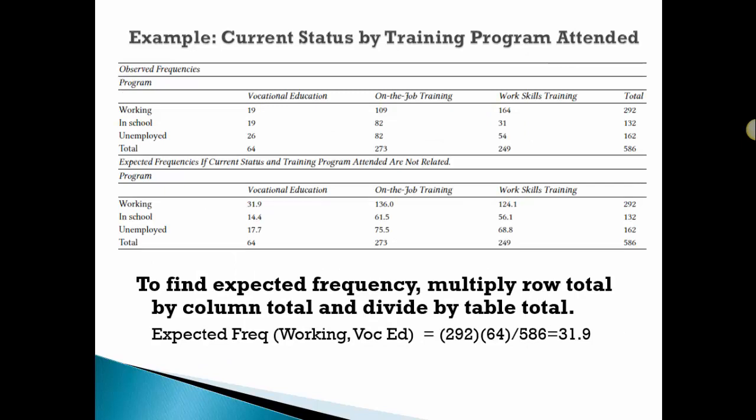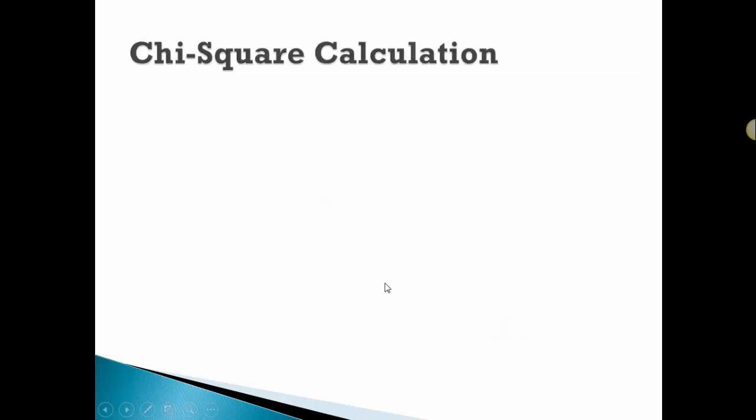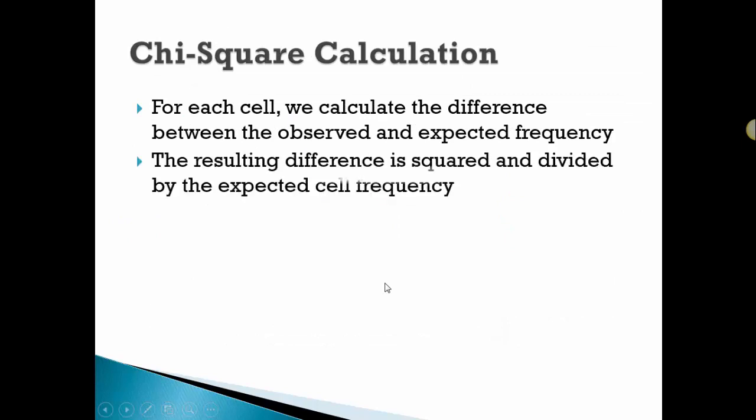What we look at when we do the chi-square, we actually calculate what are called the expected cell counts, and we compare what we observed to what we expected. To find the expected, you take the row total times the column total and divide by the overall. For the working vocational ed, we take 292 times 64, divide it by 586, and we come up with that 31.9. What the chi-square statistic actually does is take the difference between the observed and expected, squares it, and divides by the expected as a way to standardize it in order to get the chi-square calculation.